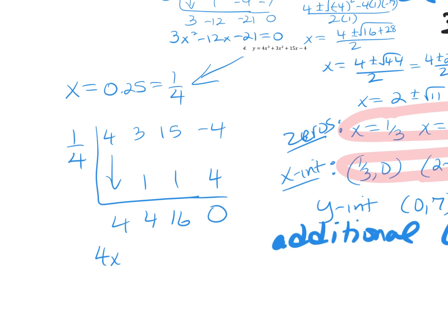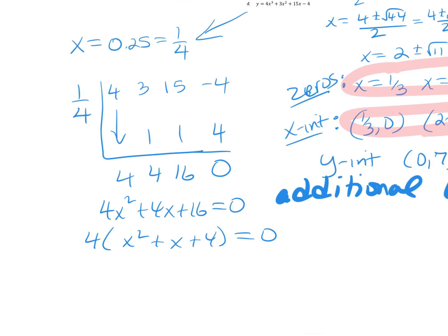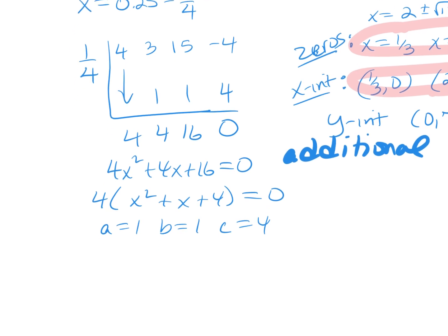Adding back in my variables, I can factor out a GCF of 4. Now I'll check if it can be factored — no, it cannot. There are no factors of 4 that give me 1. So I need to use the quadratic formula, and the results are going to be either irrational or imaginary. Let's see what we get.